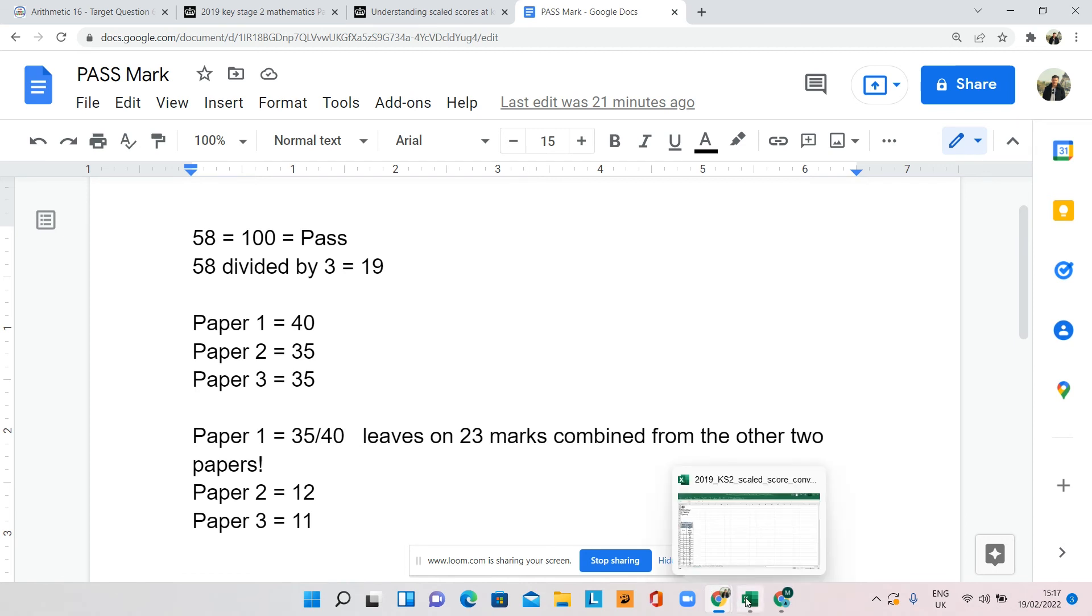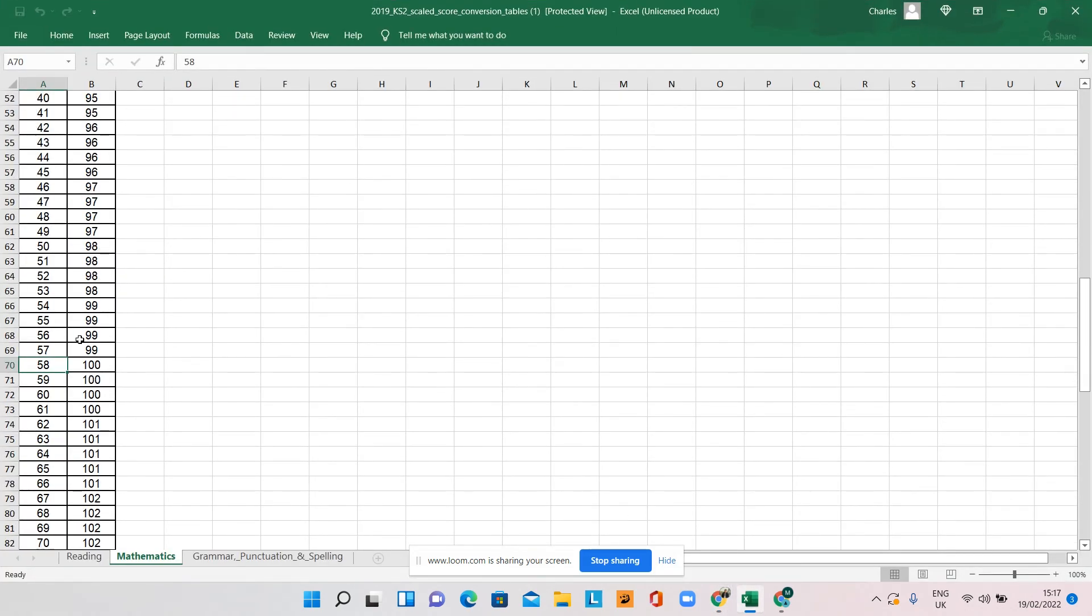Just a quick aside from that as well. Obviously, that is the pass mark 58 between 58, 56, depending on the year, but also there is a mark which is further up here. If your child did really well, what the greater depth score would be because that is also a scaled score as well.